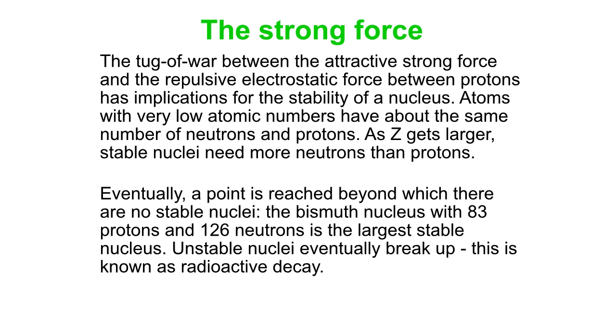Beyond a certain point, you don't have any stable nuclei at all. The bismuth nucleus that has 83 protons and 126 neutrons is the largest known stable nucleus. What happens when you're unstable? You basically decay.